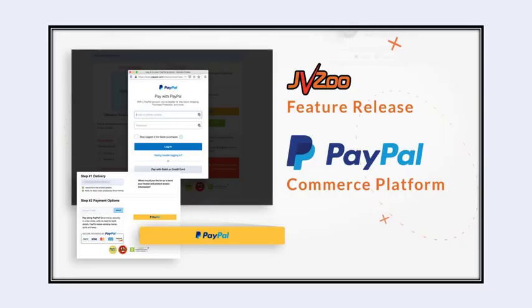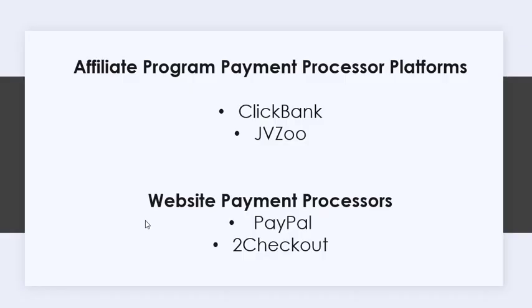Next, pick a payment processor and insert your payment button. Platforms like ClickBank or JVZoo work well if you're going to have an affiliate program. You can also use processors like PayPal or 2Checkout alongside an affiliate script hosted on your site, such as a membership platform.